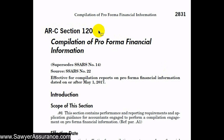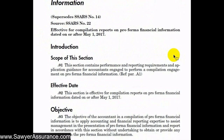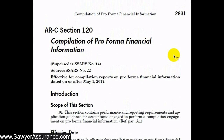In this video we're taking a look at ARC Section 120, which covers the compilation of pro forma financial information. Up until this point we've done videos on compilation engagements in ARC Section 60 and ARC Section 80, which are on compilations of historical information. This particular section is specific to pro forma information, and it's pretty similar to ARC Section 80 — in fact it references a lot of requirements included in ARC Sections 80 and 60.